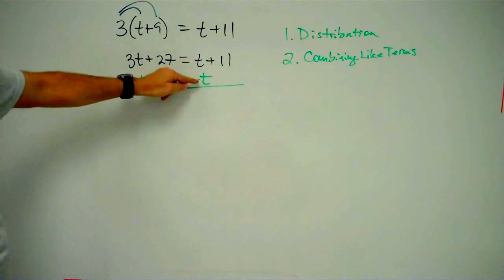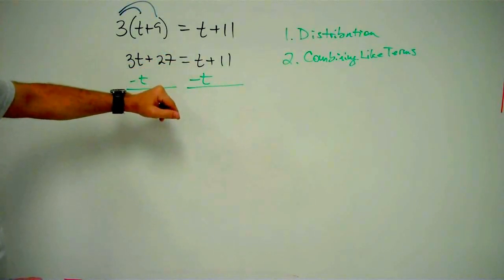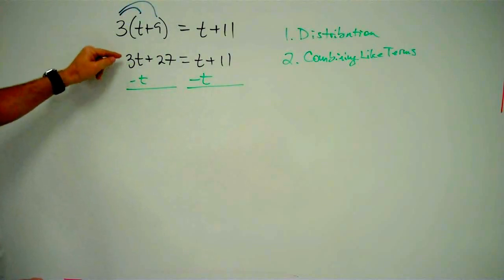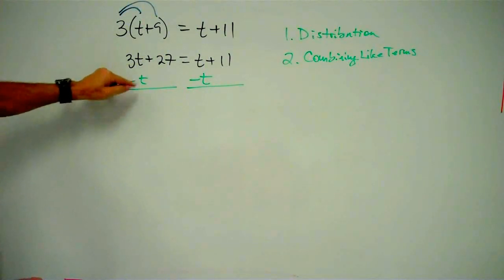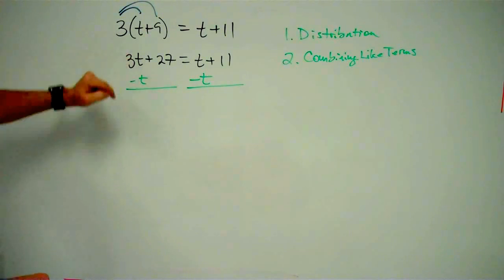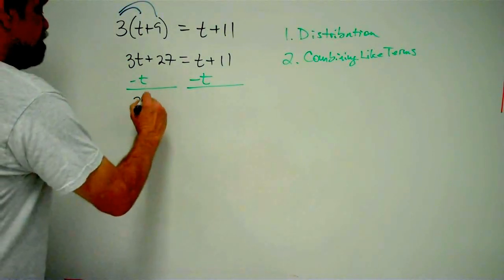I can subtract t minus t. No problem. When you subtract something from itself, you get zero. And I can subtract 3t minus t. Think of this as 3t's, and this is 1t. You take 1t from 3t's, and you are left with 2t's.